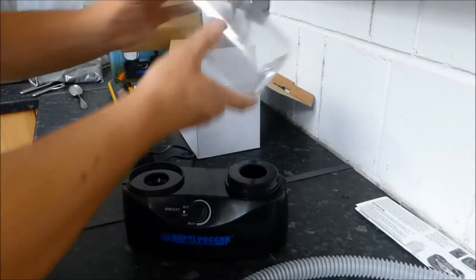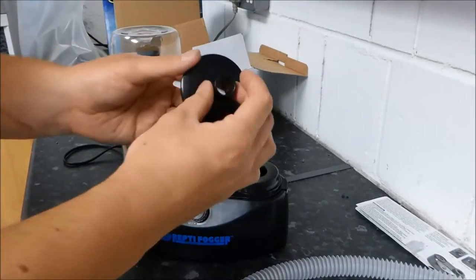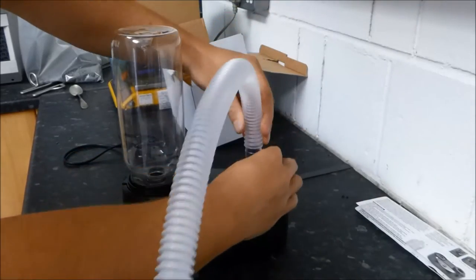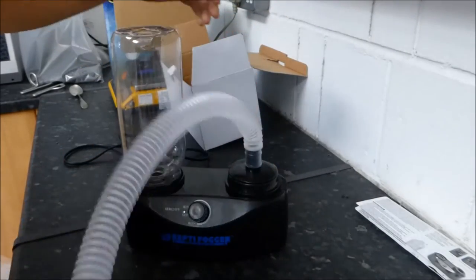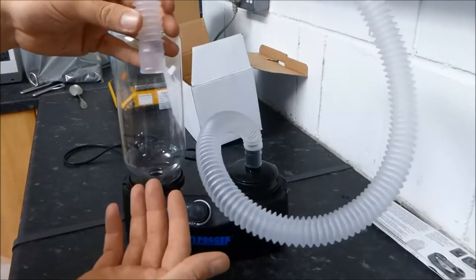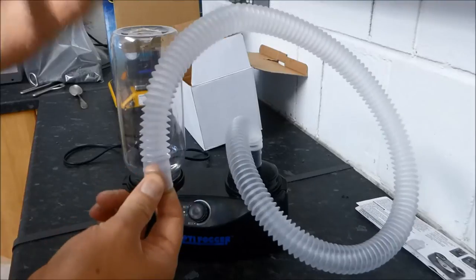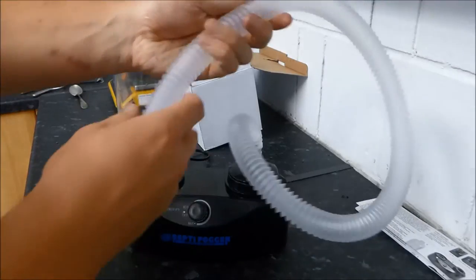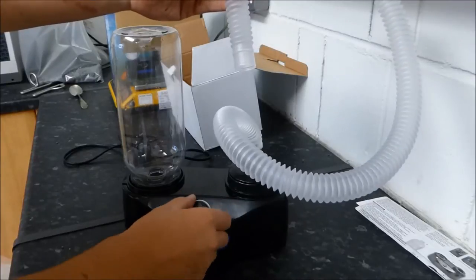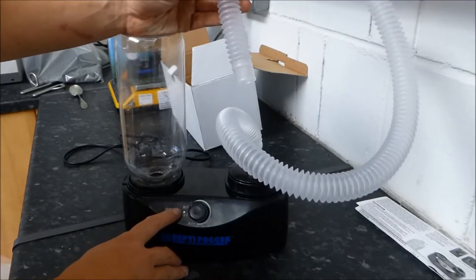So let's reassemble. There is also a spout which goes on the outlet, and then the tubing connects to the outlet. This pipe would then be placed into your terrarium, vivarium, whatever you're using it for. And then you would simply plug it in, turn the dial. This light should illuminate blue and the machine would operate.